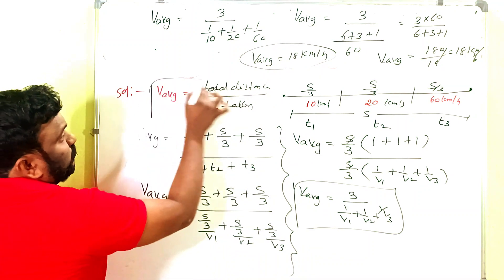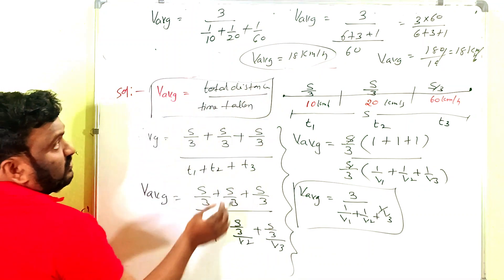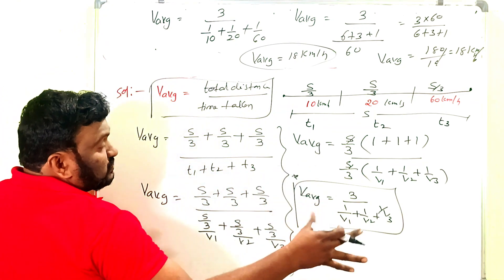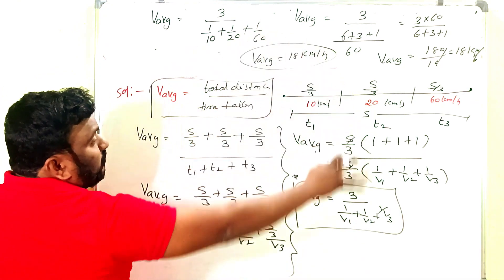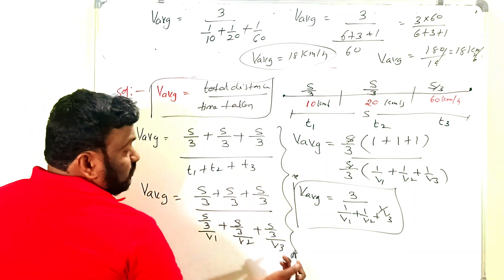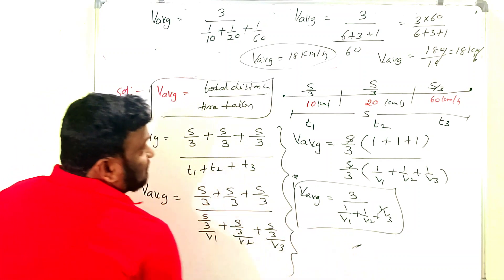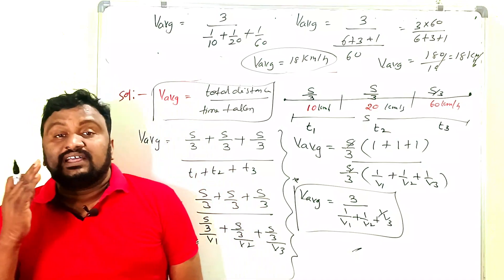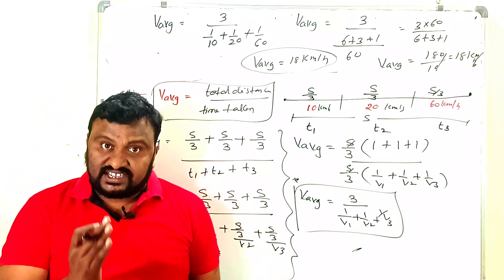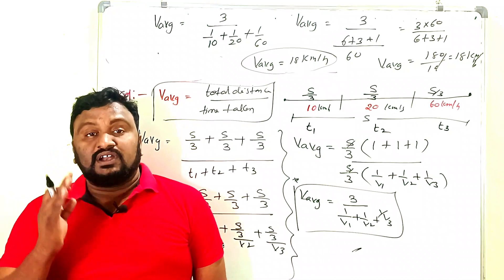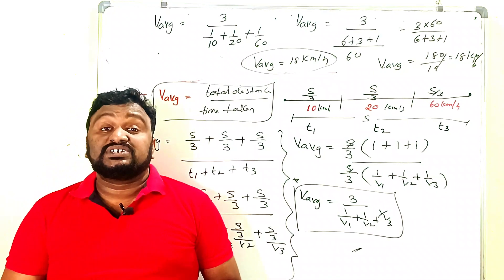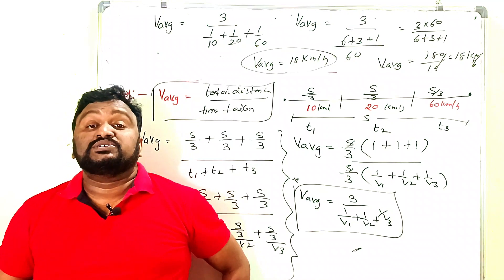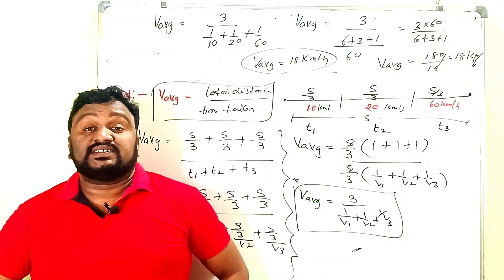So the average speed formula is total distance by total time taken. For this type of situation, use this formula. If you want to write notes, just pause the video. This is a most important problem, don't neglect it. If you understood this, please give a like, share, and comment. Your support helps me. Please subscribe to my channel and share it with your friends.